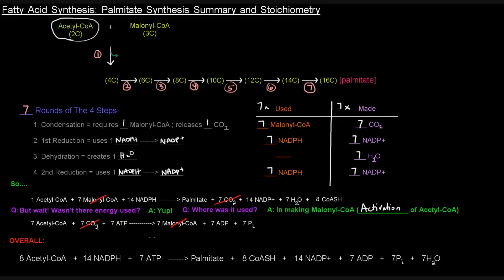So what did we end up with? The overall stoichiometry is that we had one plus seven acetyl-CoAs, so eight acetyl-CoAs, and then we had 14 NADPHs and seven ATPs used to create one palmitate, eight coenzyme A's, 14 NADP pluses, seven waters,